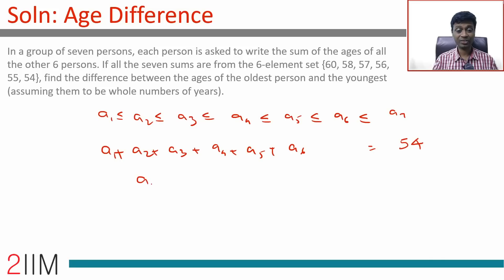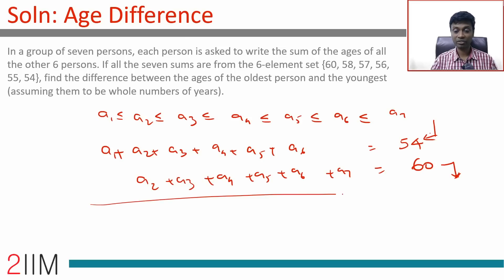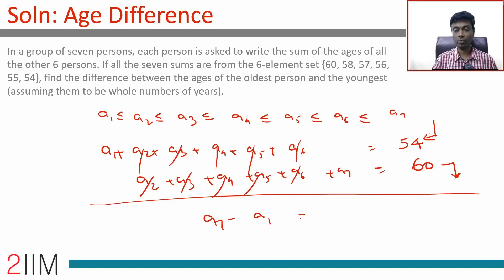And if you add the six largest terms, the sum is 60. So: sum of six smallest ages = 54, sum of six largest ages = 60. Subtracting one from the other, all the middle terms cancel, leaving a7 − a1 = 6.